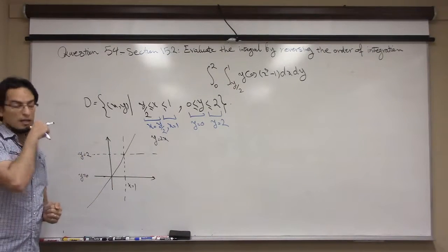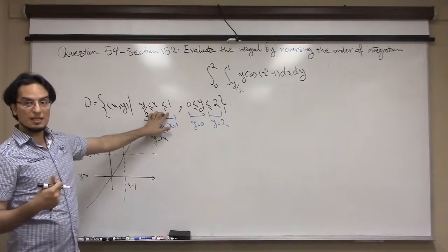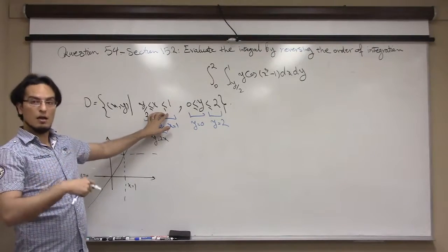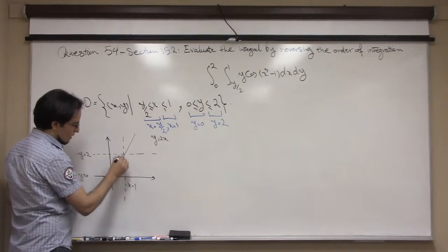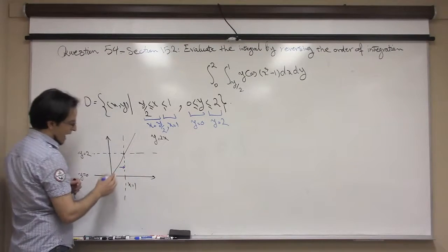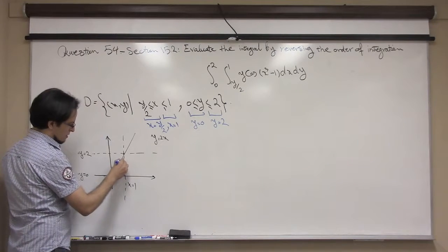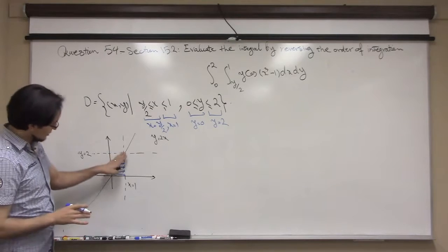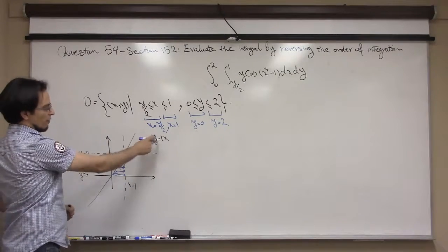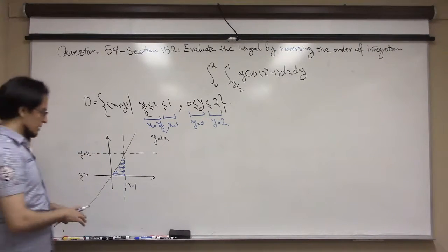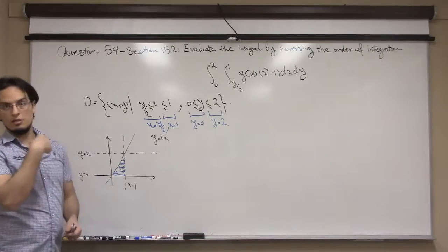The intersection of these four lines gives me two regions. To identify which one I'm integrating over, note that x is less than 1 and bigger than the line y = 2x. So I'm integrating over the triangular region below the graph of y = 2x — this is a type 2 region.